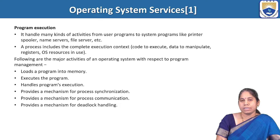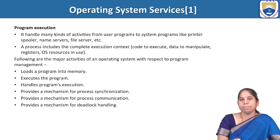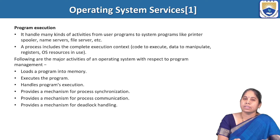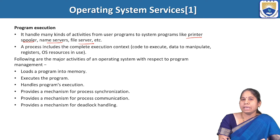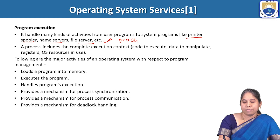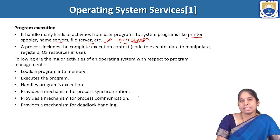In an examination, a question may come like 'describe the different functions of an operating system,' and you have to give this answer. Under program execution, the operating system performs many activities from user to system programs like printer spooler, name servers, file servers, etc. Each and every activity we call a process, and this process must require a complete execution.